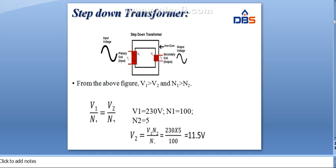For example, if V1 is 230 volts, N1 is 100 turns, and N2 is 5 turns, then the secondary voltage V2 will be 11.5 volts. So the primary voltage of 230 volts is converted to 11.5 volts. That is based on the number of turns. That is the step-down transformer function.